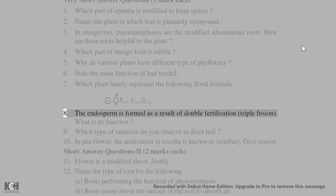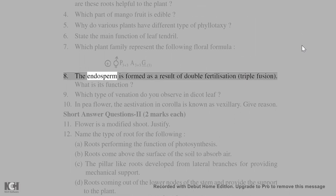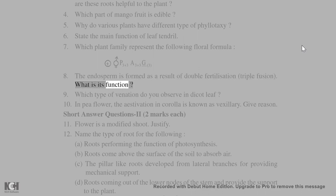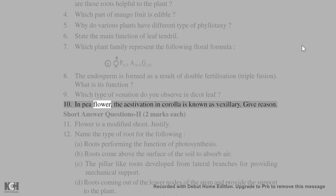9. Which type of venation do you observe in a dicot leaf? 10. In the pea flower, the aestivation in the corolla is known as vexillary — give reason.